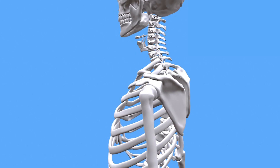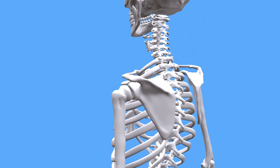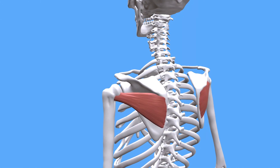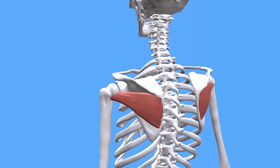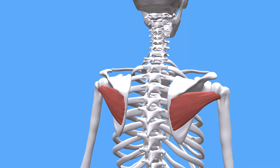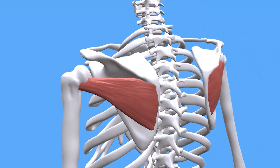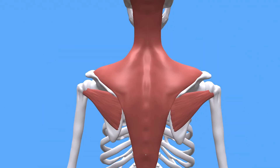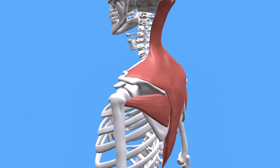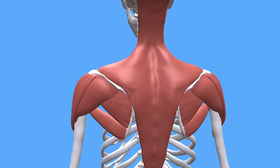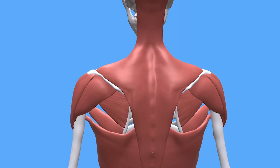The infraspinatus muscle starts from the entire surface of the infraspinus fossa, leaving the lateral border and the inferior angle of the scapula loose. The other end of the infraspinatus muscle is attached to the greater tubercle of the humerus by a short tendon. The initial part is covered by the trapezius muscle, the area of attachment to the shoulder is covered by the deltoid muscle, and the lower part is covered by the greater round muscle and the broadest muscle of the back.